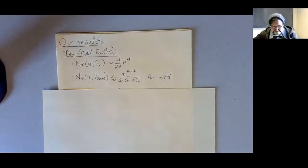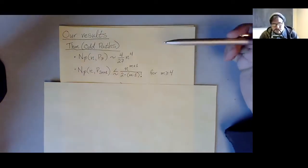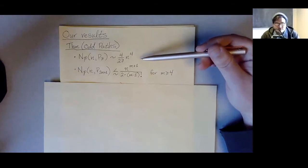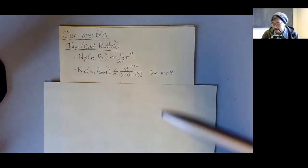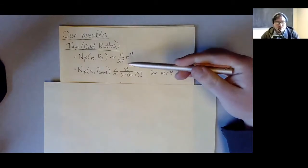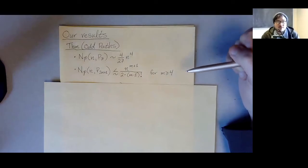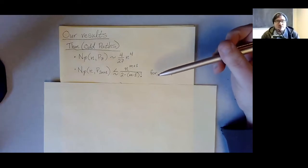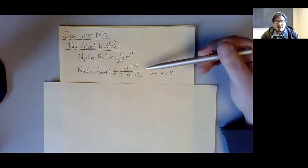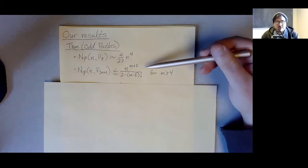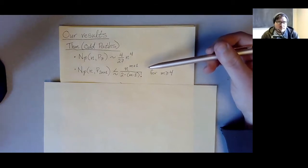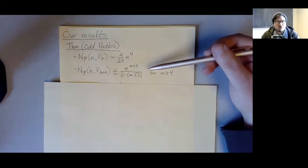So our results are about paths on an odd number of vertices. First, we verify the conjecture of Ghosh and friends for the seven-path. Namely, if you plug into their formula you get (4/27)n^4, and that's indeed what we proved. For all other odd-length paths, we were able to significantly improve the upper bound. The order of magnitude — n to the (m+1) — is actually an easy result any of you could prove in a couple of minutes.